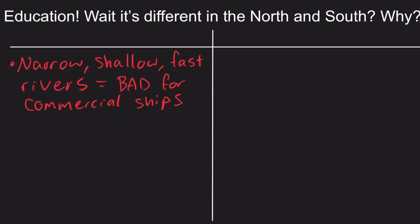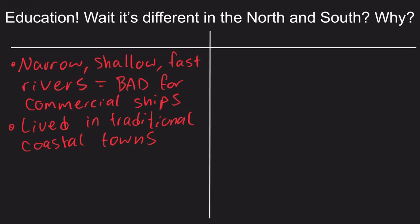The coastal locations people settled in — like New York, Massachusetts, New Jersey, and Delaware — allowed for traditional towns to be set up. These towns frequently had amenities such as schools within walking distance for kids. That said, the only kids who were actually able to attend school were those whose parents could afford for them not to be working at home contributing to their family business.